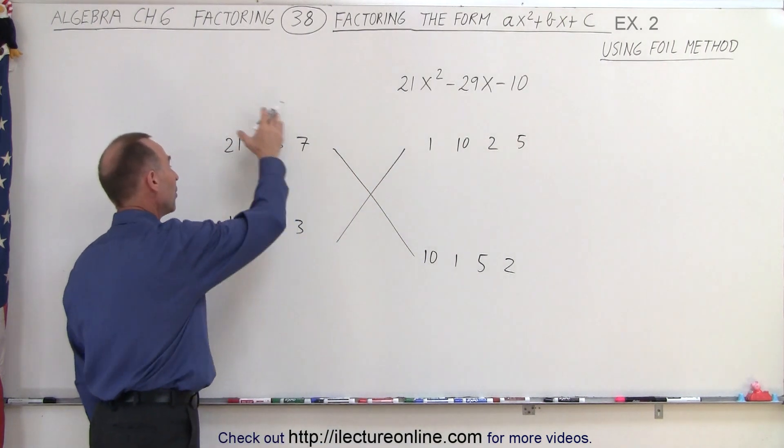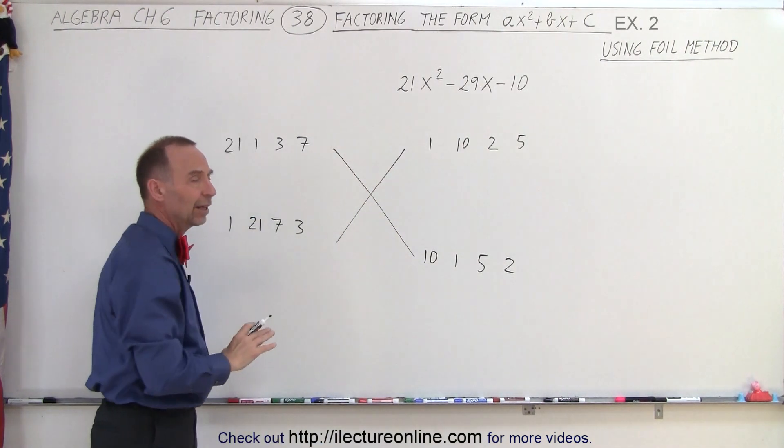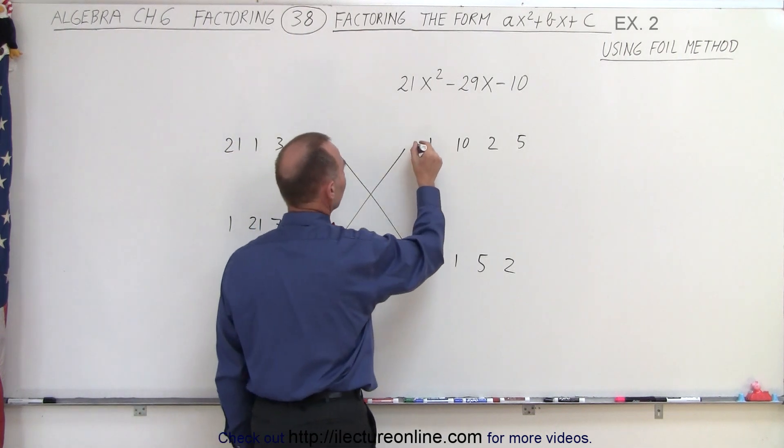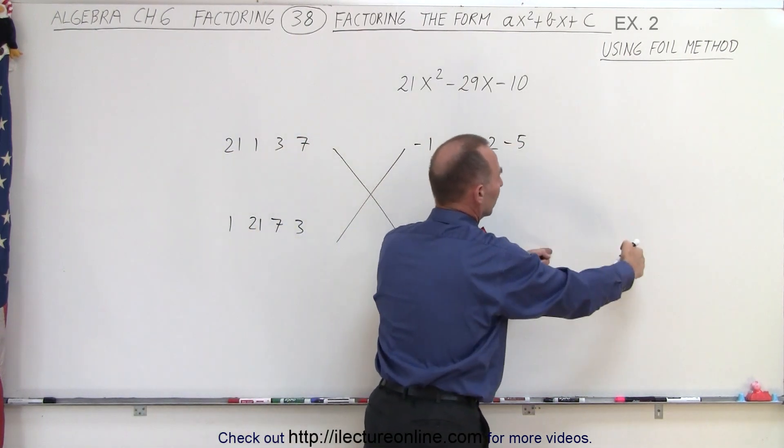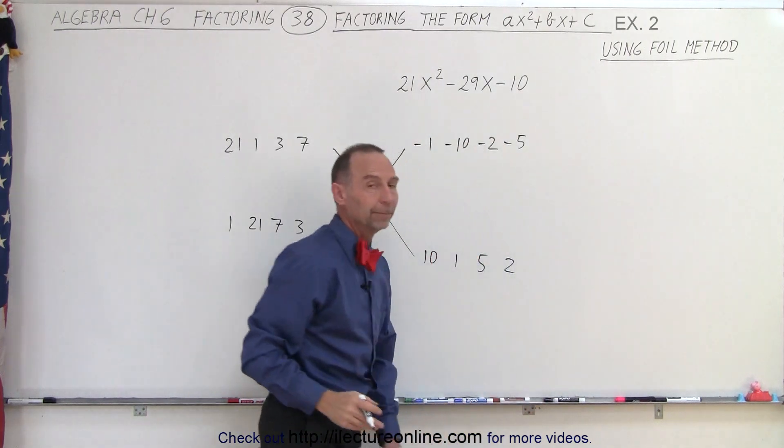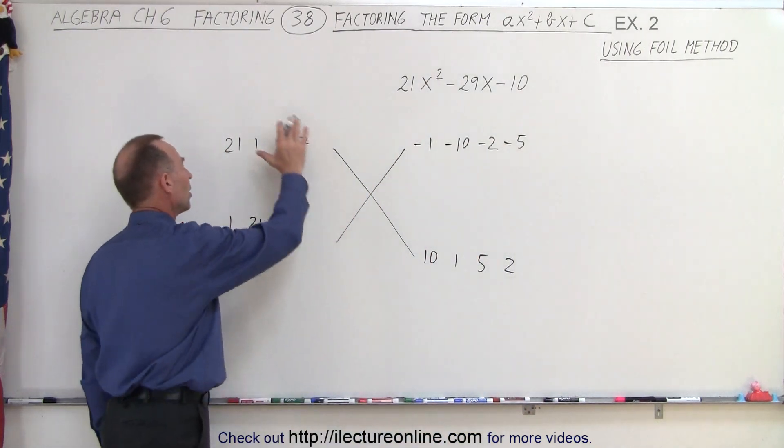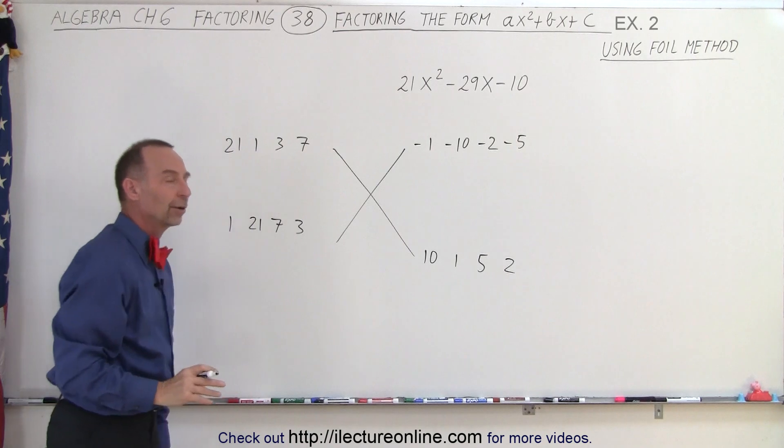However, since we already have all the possible combinations on the left, it's sufficient to put only the negative signs at the top, and we don't need to have another set of four of these with the negative sign on the bottom. Again, the reason is we have all the possible combinations on the left side already.